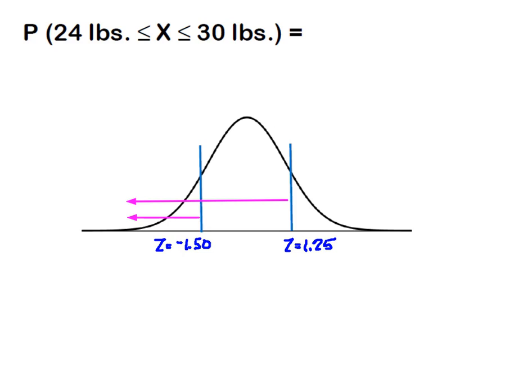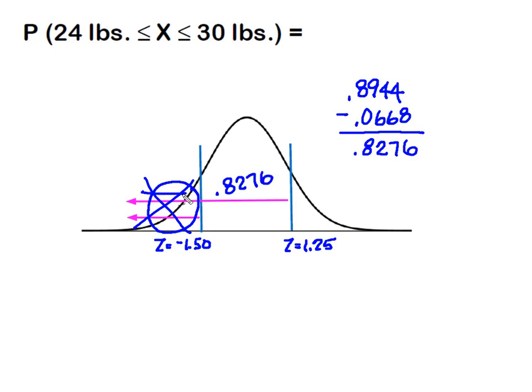So what we're going to do to correct that is we're simply going to take the two areas and we're going to subtract this area that's counted twice. So the area associated with that to the left of that z-score of 1.25 was 0.8944, and this little area right here that we want to get rid of was 0.0668. So I'm going to take it away and I'm going to end up with 0.8276, and that's going to be this area in between my two points, eliminating this area that was double counted, making the probability that this puppy weighs between 24 and 30 pounds 82.76 percent.